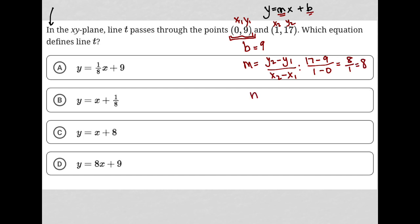So now I know that my m value is equal to 8. So I'm going to go back up here and just plug my m value in, as well as my b value. And what I get is y equals 8x plus 9. That is my answer. And therefore choice D is the correct answer here.